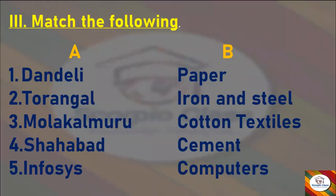Now we have the next section: Match the Following. We have Column A and Column B, and the answers are correctly matched. Dandeli — Paper. Toranagallu — Iron and Steel. Molakalmuru — Cotton Textiles. Shahabad — Cement. Infosys — Computers. These are the correct matched answers, and we have finished the Match the Following section.